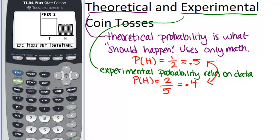What you should expect to happen is, as you increase the number of trials, so we only tossed the coin five times. What if you tossed it a hundred times, or a thousand times, or a million times? As you increase that number, the experimental probability should get closer and closer to the theoretical probability.